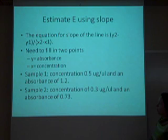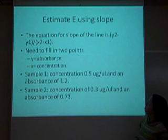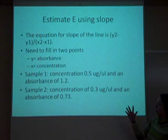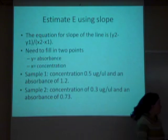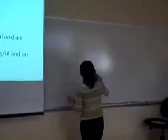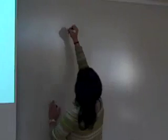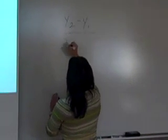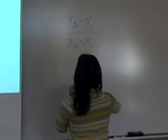Let's say our sample one, the concentration is 0.5 micrograms per microliter, with an absorbance of 1.2. And our second concentration is 0.3 micrograms per microliter, and has an absorbance of 0.73. So there are my X and Y values, and we can plug them in to the equation.